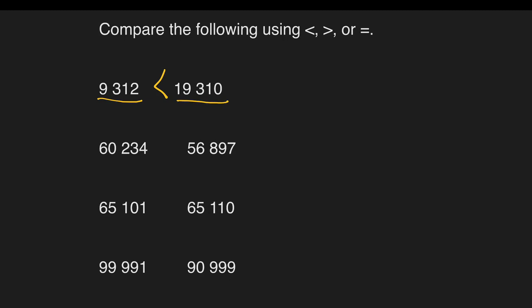How about number two? We have 60,234 and 56,897. Our answer is greater than. Because in this case, we have 6 and then 5. Since they have the same number of digits, number two is greater than.